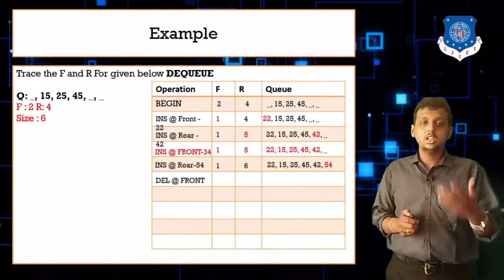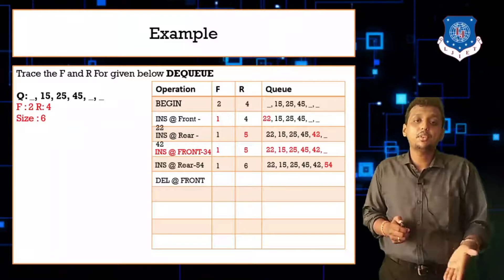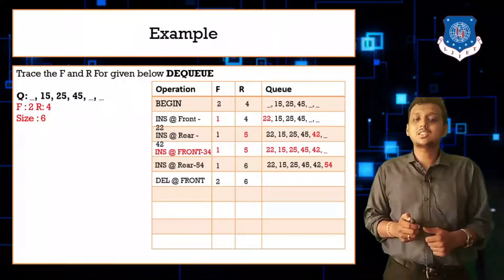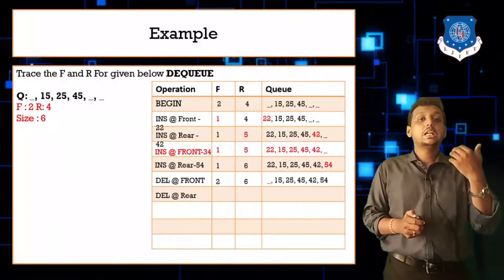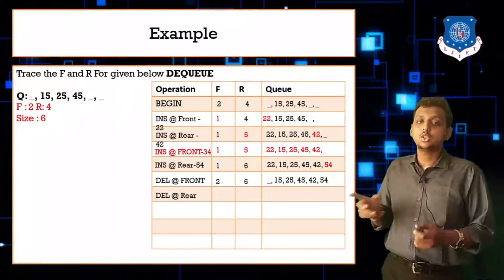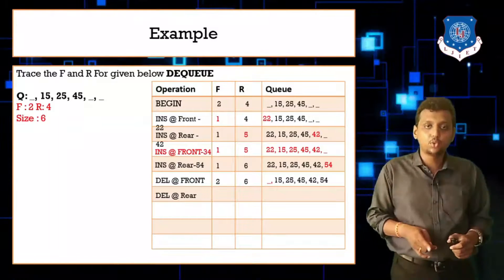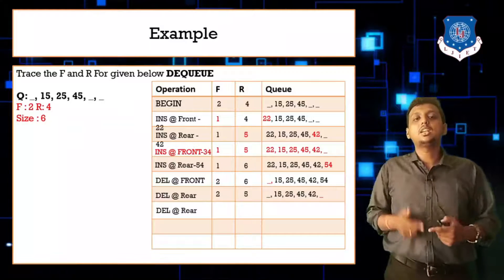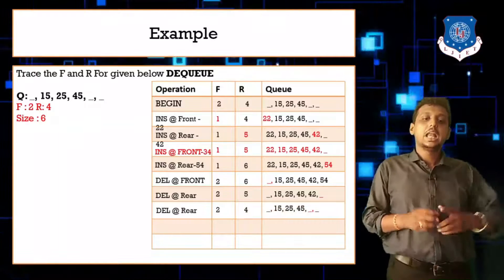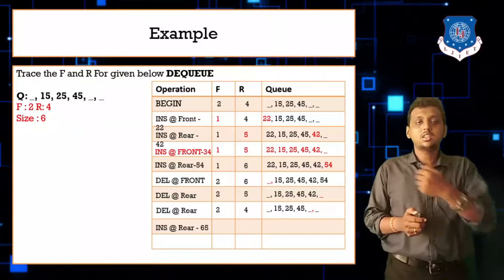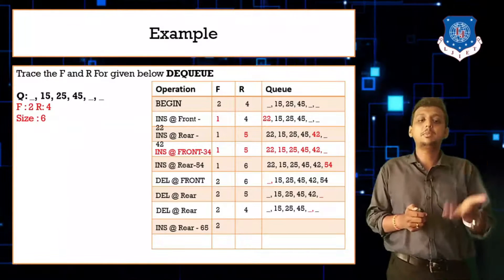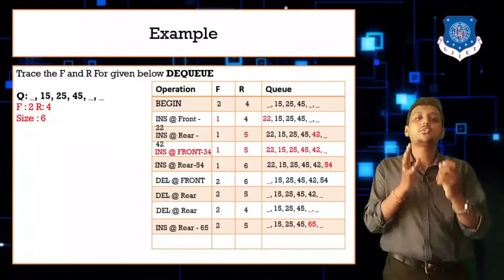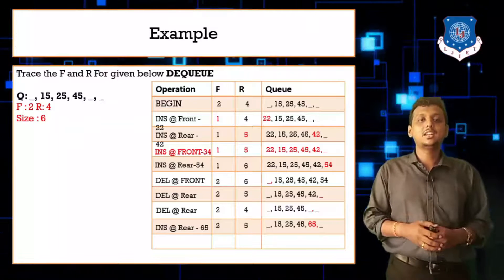Next: insert at rear 54 — rear incremented to 6, value 54 inserted. Delete at front — value 22 is deleted, front incremented to 2. Delete at rear — rear decremented, value 54 deleted, rear becomes 5. Delete at rear again — rear decremented, value 42 deleted, rear becomes 4. Insert at rear 65 — rear incremented to 5, value 65 inserted at that position.